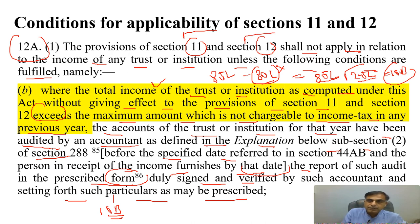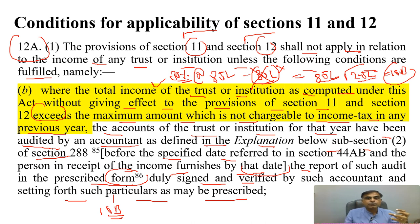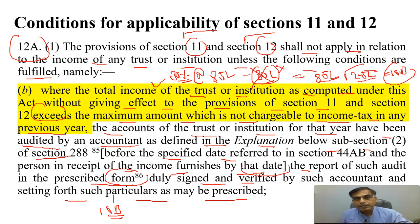What will be the consequence of losing the section 11 and 12 exemption? Most probably, the income tax department or CPC — the wing of the income tax department — while processing your return, will not give you the benefit of the 80 lakh deduction. In that scenario, on the whole 85 lakh rupees they will apply the tax rate of MMR, which will be 30% plus surcharge plus HEC. This is a very dangerous consequence for charitable or religious institutions, which is why Form 10B filing is very important.